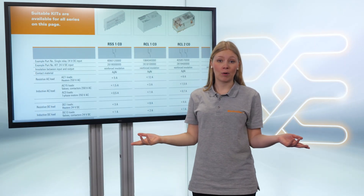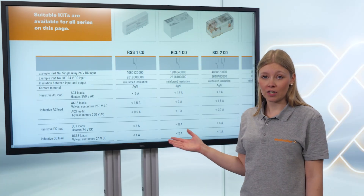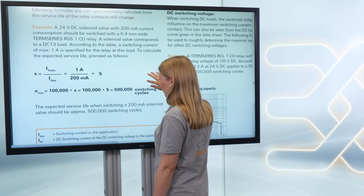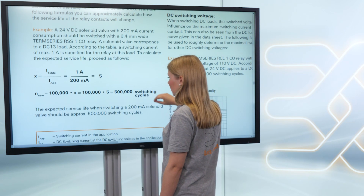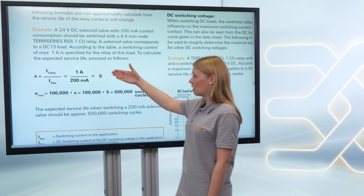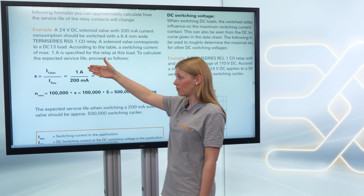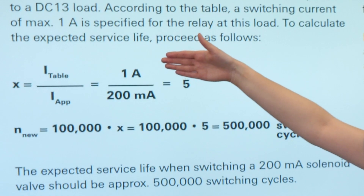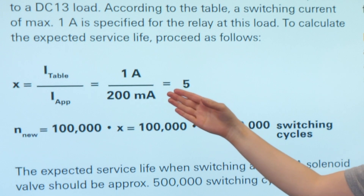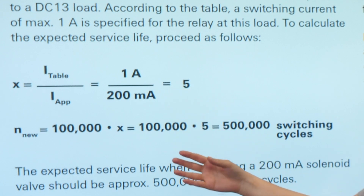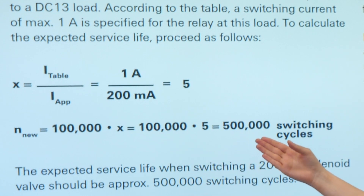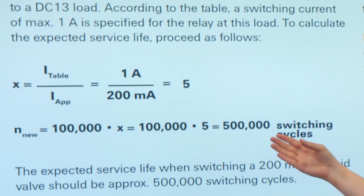But how long will my relay switch? This brochure can also provide a solution to this question. According to the table, a maximum switching current of one amp is specified for the relay at this load. We divide this value by our switching current and multiply it with 100,000 to get 500,000 switching cycles.